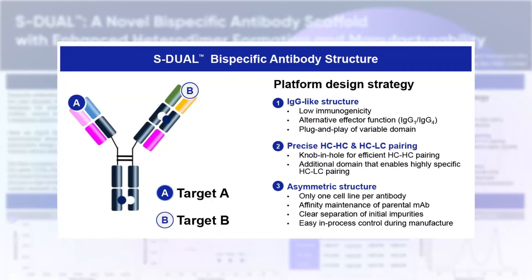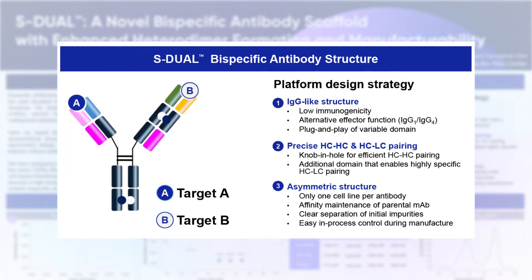The S-DUAL platform exhibits the following structural features. Firstly, it adopts an IgG-like structure, which translates to low immunogenicity and allows for plug-and-play customization of CDR of desired targets. Moreover, it can be easily converted to either IgG1 or IgG4 structure, depending on the mode of action.